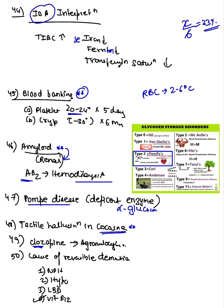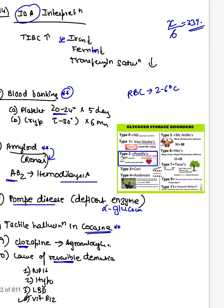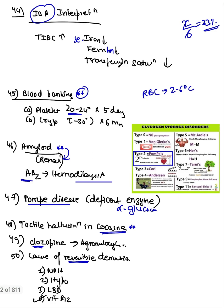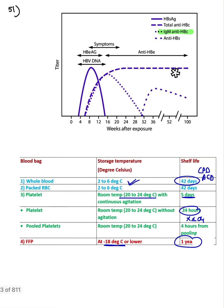Cocaine causes tactile hallucinations — as if something is crawling over your body. Clozapine causes agranulocytosis. Causes of reversible dementia include vitamin B12 deficiency, which causes subacute combined degeneration — that is important.